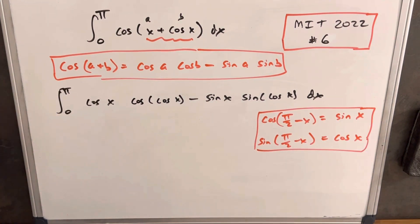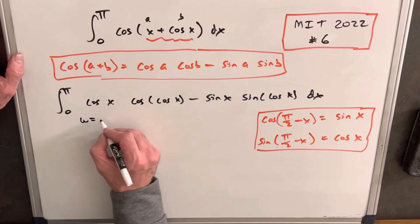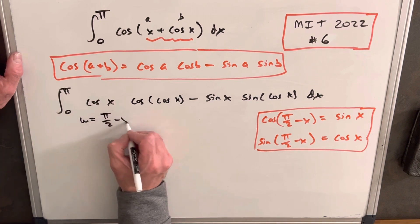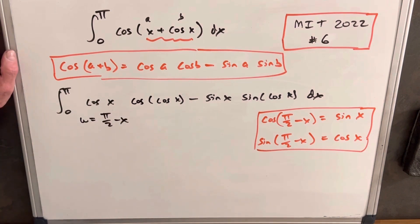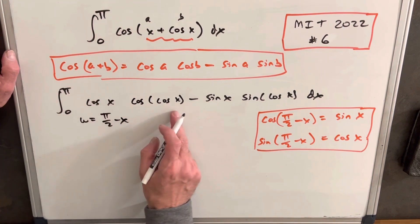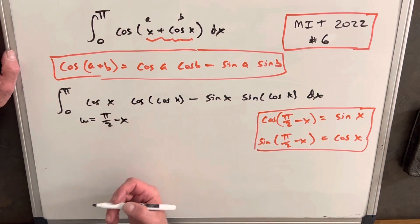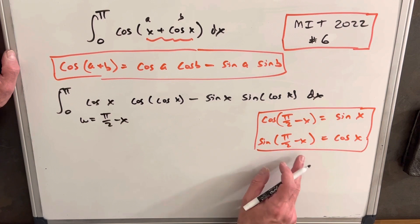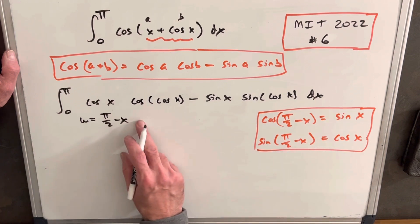I want to do a u substitution. The u substitution is going to be u equals pi over 2 minus x. And that's not very intuitive, right? Because we don't even have pi over 2 minus x in this expression. And it's all based on this formula. We want to be able to use this, and it's going to make that possible.